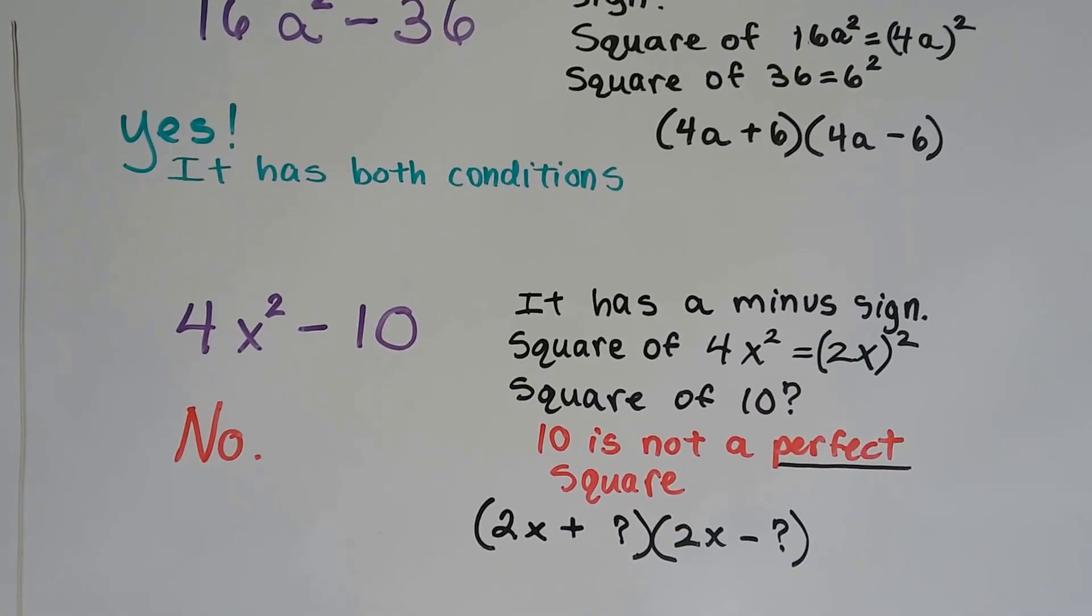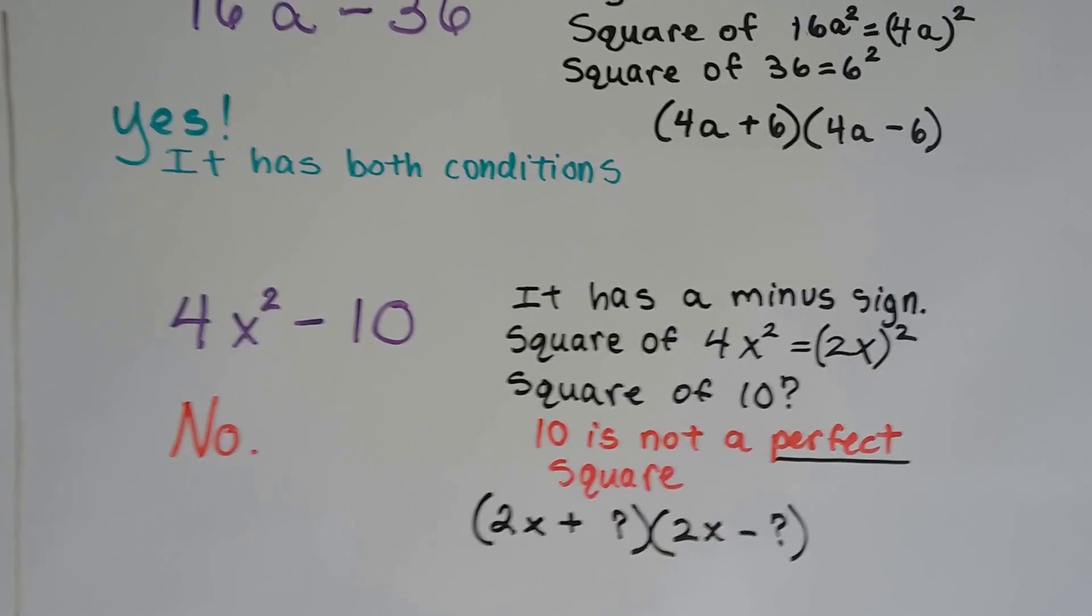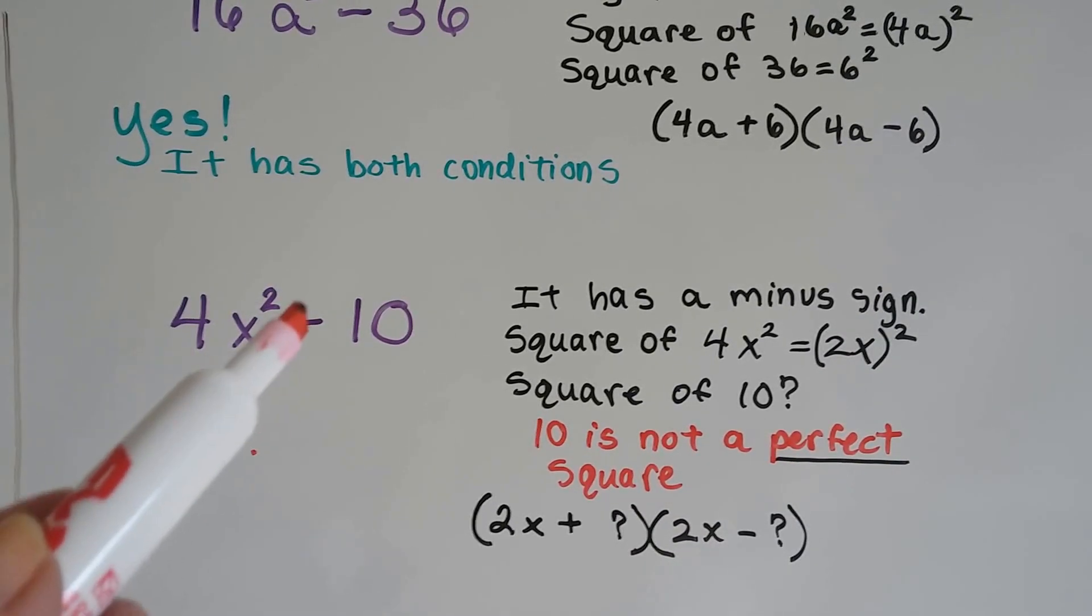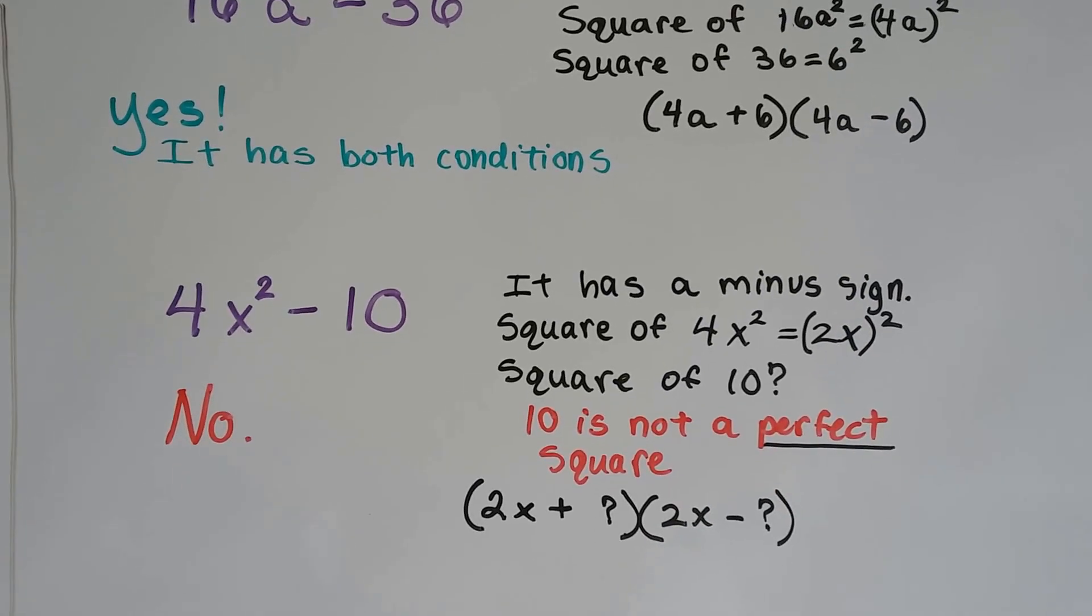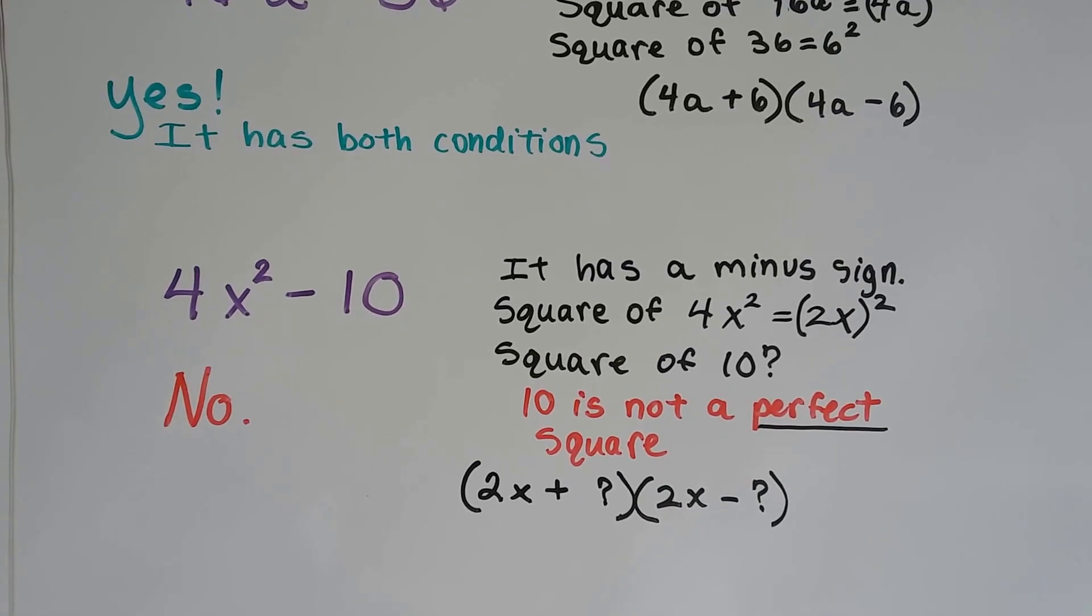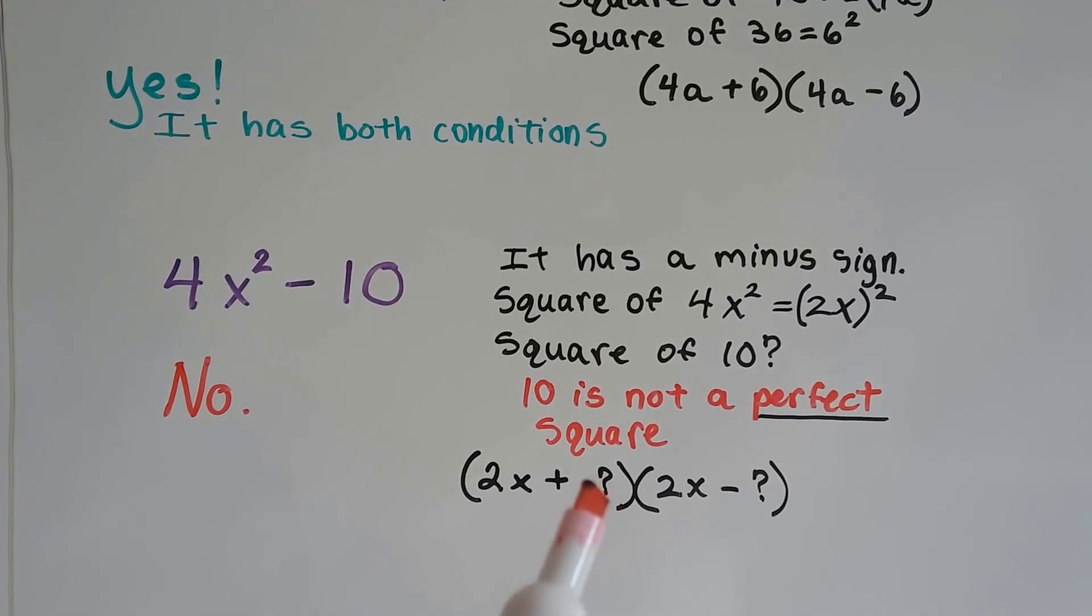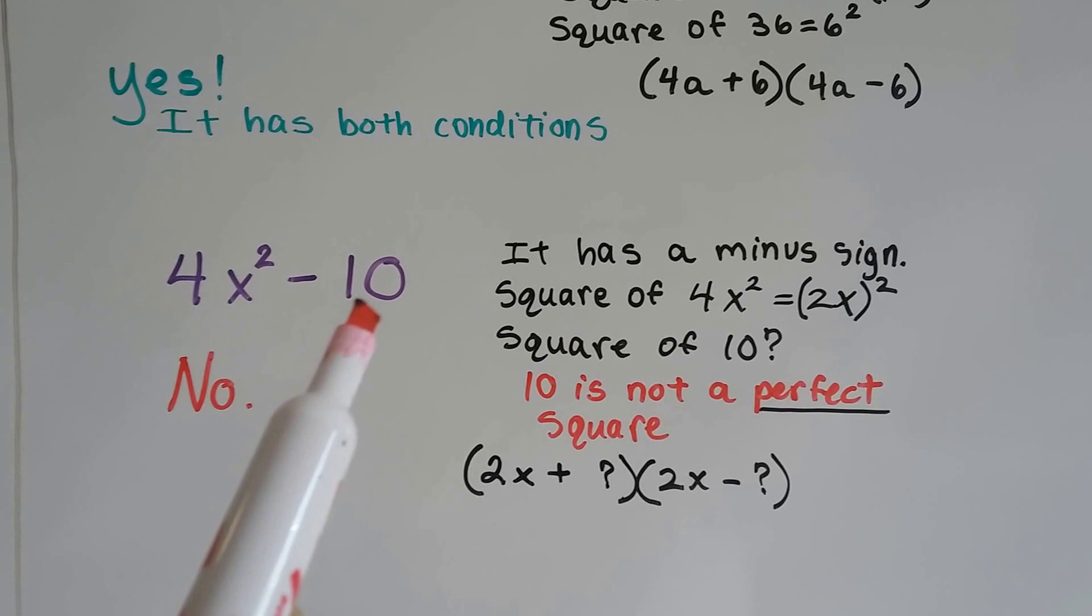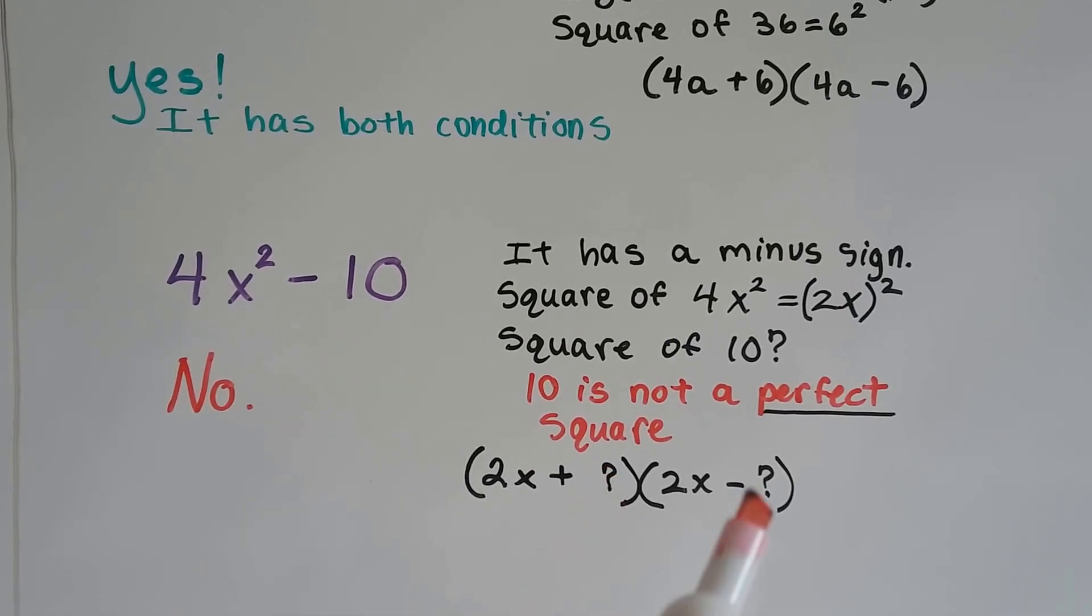How about this one? No. This one's a no. It has the minus sign, and that's a positive and that's a negative, so that works. But it's not a perfect square. 10 does not work. If it was 9, it would work because then we'd be able to put a 3 and a 3.